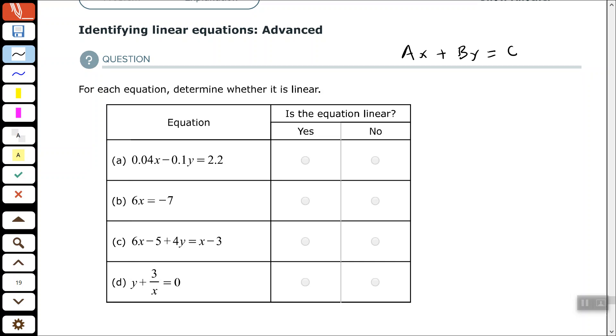So we want to determine if the equations are linear equations. So part A, we have 0.04x minus 0.1y equals 2.2. This does not fit the definition in this form because those numbers are not integers. However, if we multiply both sides by 100, because my decimal, the lowest, smallest decimal place is in the hundredths position,